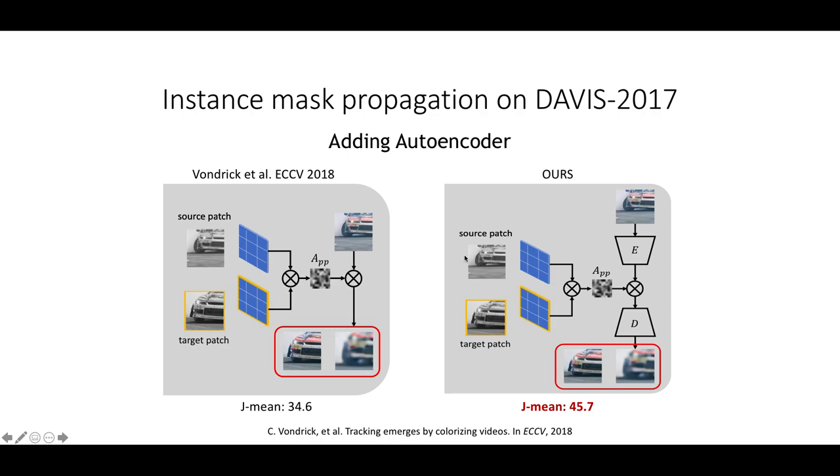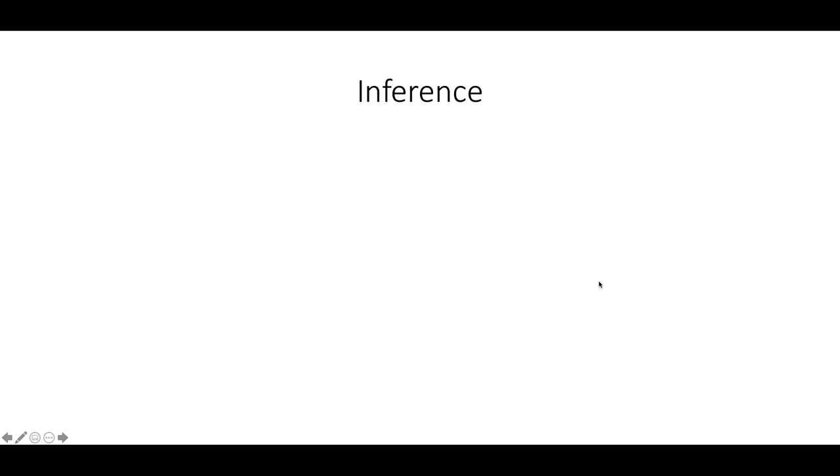Here we also compare with related work from ECCV 18, which uses randomly cropped source and target patches to match color. The difference is that this model directly matches the color channel instead of any feature map. We follow this setting by removing the progressive training, and we only use color reconstruction. But we added the autoencoder, and we found that purely adding the autoencoder can already significantly boost the performance by over 10%, which indicates that the transformation is better conducted in a feature space with more context information rather than the original image space.